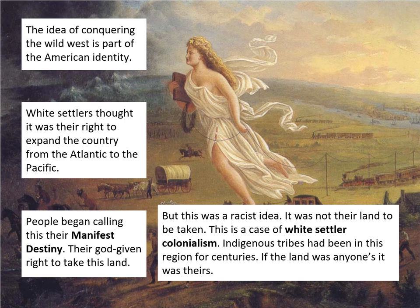It was not their land to be taken, and not their right to take it. This is a case of white settler colonialism — white settlers trying to form colonies in areas that weren't theirs. The indigenous tribes, which we've seen in some of those paintings, had been in that region of the west for centuries. If that land was anyone's, it was theirs. And it's the Plains Native Americans that I want to come back to in the next video.